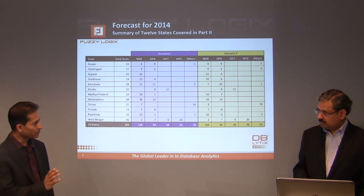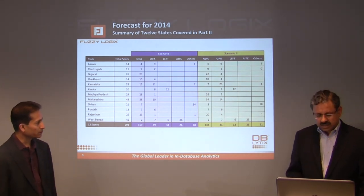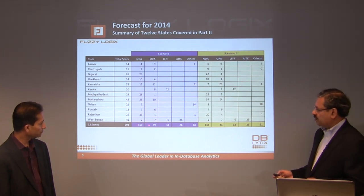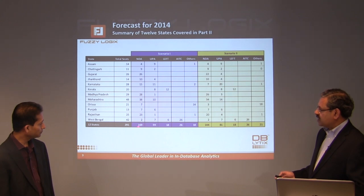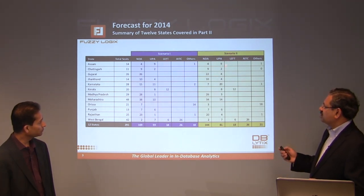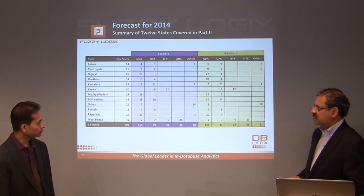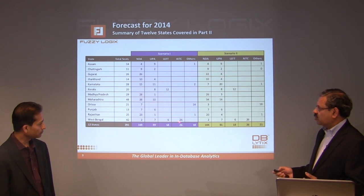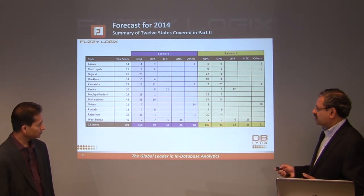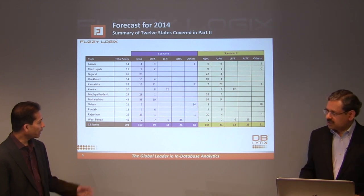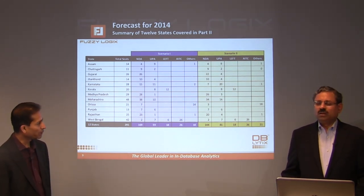That is the characteristic of this raking method — you can take various scenarios into account. For the 291 seats, in scenario one the BJP-led NDA is expected to get 169 seats and the Congress-led UPA 59. In scenario two, NDA gets 144 and UPA gets 81 seats. What is more optimistic to BJP is less optimistic to Congress, and vice versa. We illustrate NDA and UPA because they are the leading alliances in terms of seats and votes.